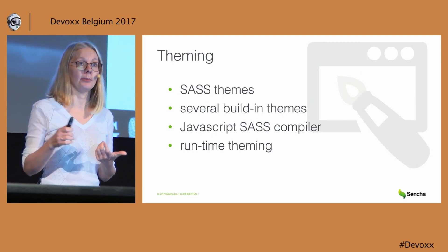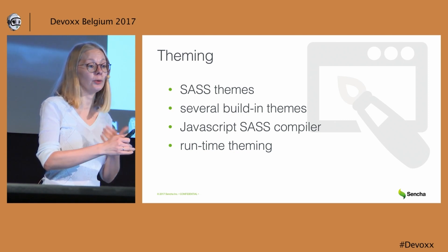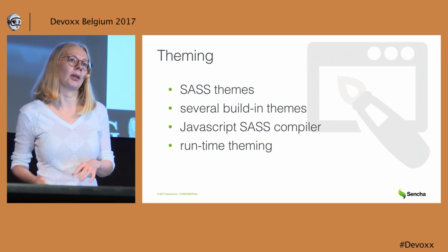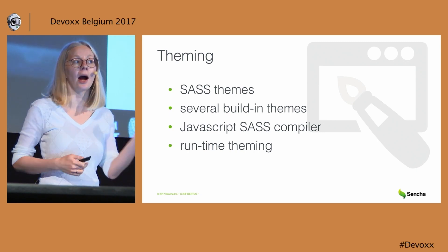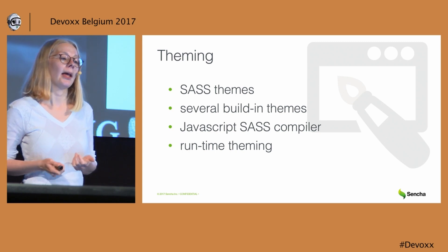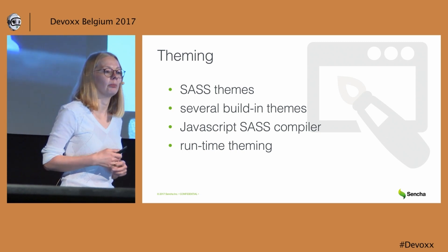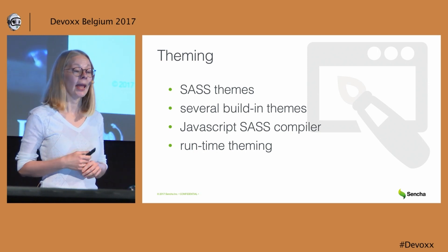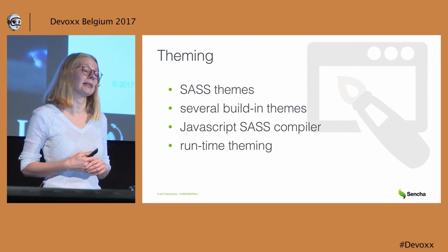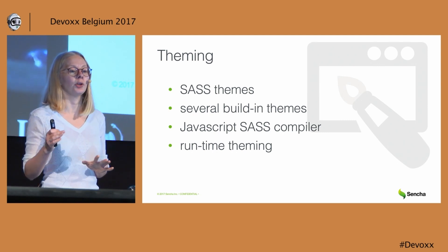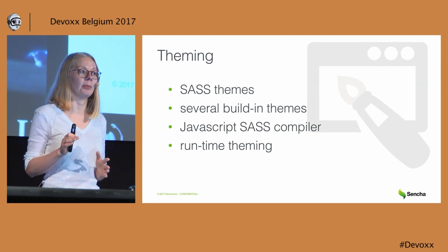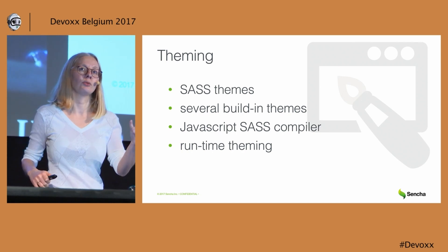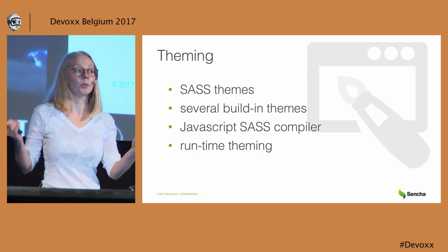Theming: as I said, theming of an ext.js application is very easy. We use SASS — Syntactically Awesome CSS themes. We have several predefined themes like the Triton theme or Material Design theme. You can configure them by changing different variables in a special graphical interface. We also provide a JavaScript-based SASS compiler you can use for runtime theming — when you theme your application and change variables like colors, you see the results in the browser immediately without a page reload.